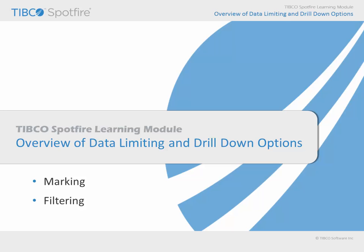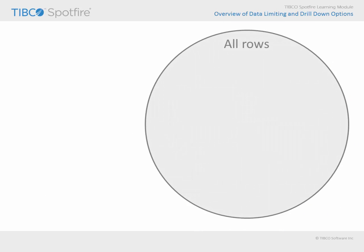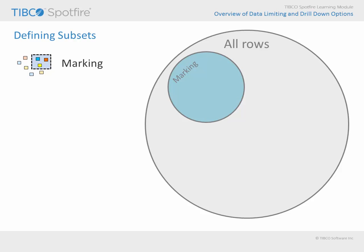The best way to think about this topic conceptually is to first imagine all rows of the data in the underlying data table being represented in a visualization. We will interact to define those subsets of data in which we are most interested. Marking is one way of interacting with items in visualizations to identify a subset of data of interest. You can also adjust filter settings in order to isolate a subset of interest.